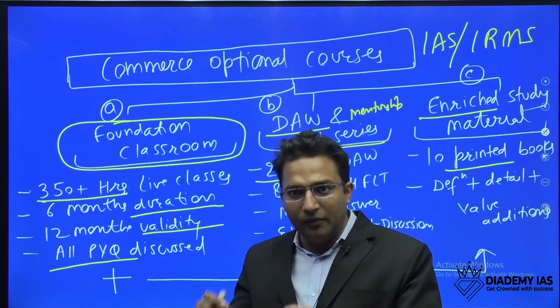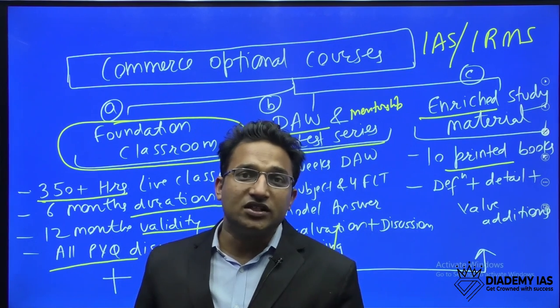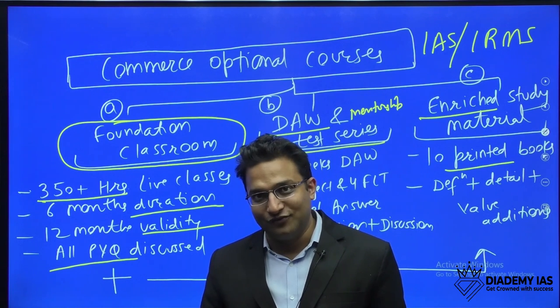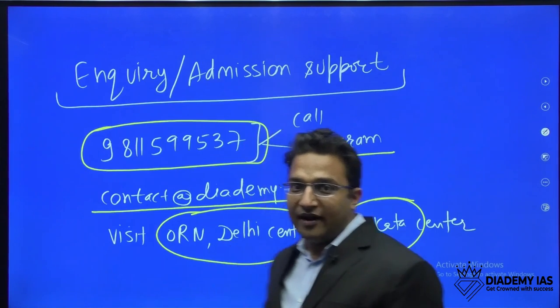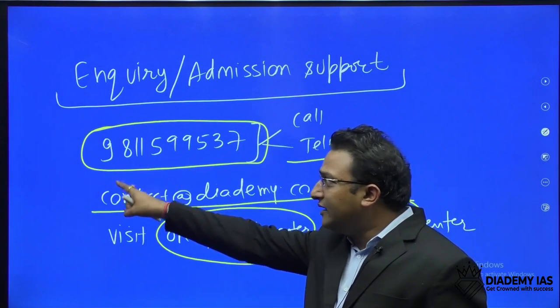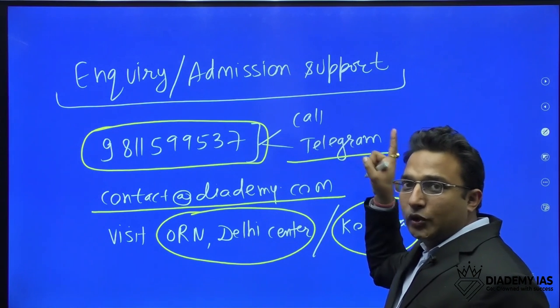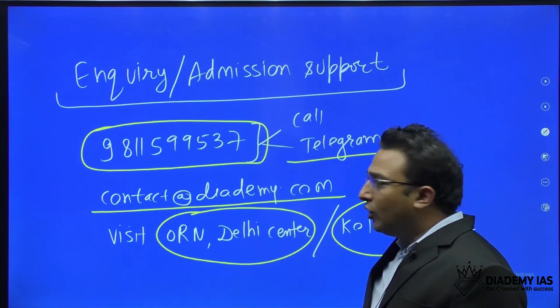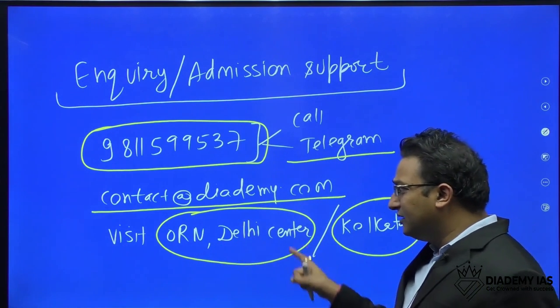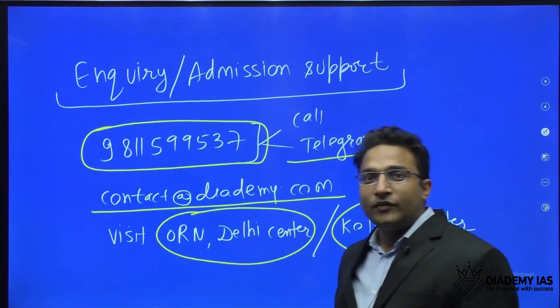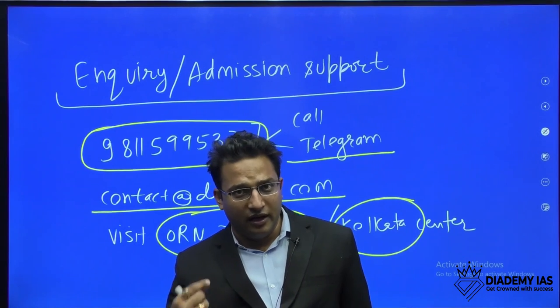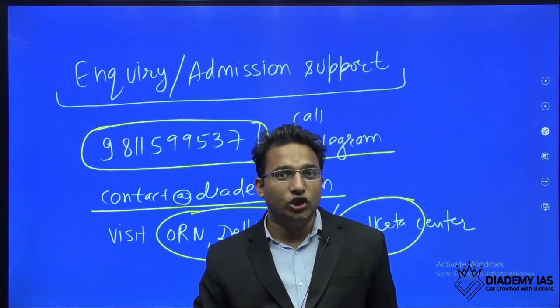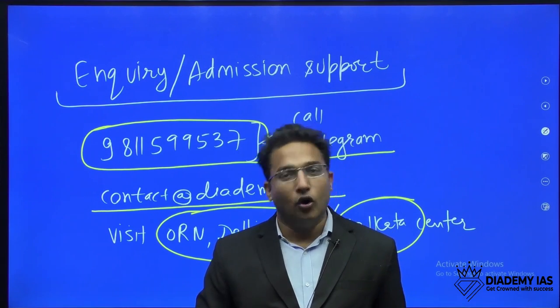Apart from this, we are also coming up with previous year question solutions, which I will discuss in a separate video. If you want to inquire about our program, we have this contact number: 9821599537. You can call on this number, send a Telegram message, or send an email at contact@diademy.com. You can visit our center in Delhi, Vrindavan center, or Kolkata center. You can get a demo, information, sample study material, and book free counseling with me one-to-one. I will share the schedule as per your convenience. All the best and God bless you.